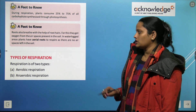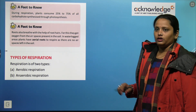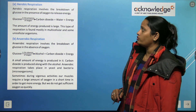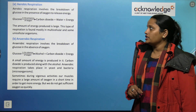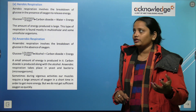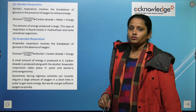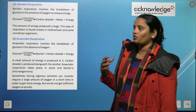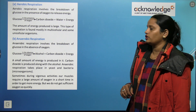Now, types of respiration: respiration is of two types — aerobic respiration and anaerobic respiration. Aerobic respiration involves the breakdown of glucose in the presence of oxygen to release energy. The formula is: Glucose + Oxygen → Carbon dioxide + Water + Energy. The amount of energy produced is large. This type of respiration is found mostly in multicellular and some unicellular organisms.